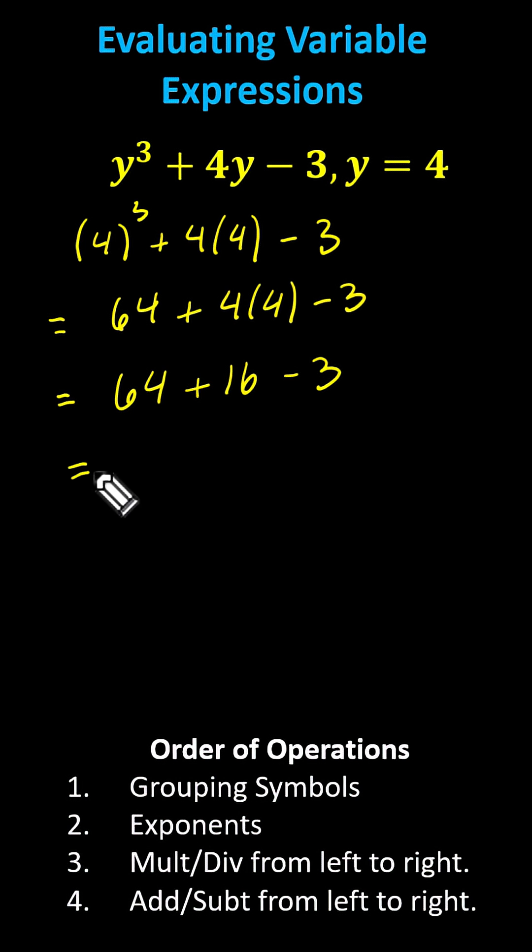And finally, we add and subtract from left to right. 64 plus 16 is 80, 80 minus three is 77. I hope you found this helpful.